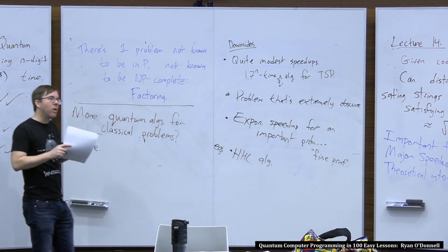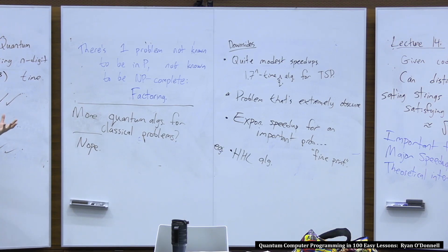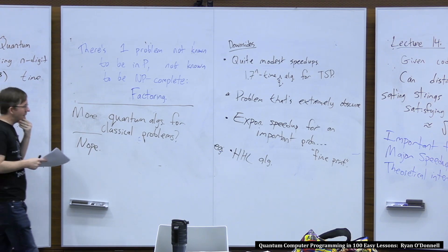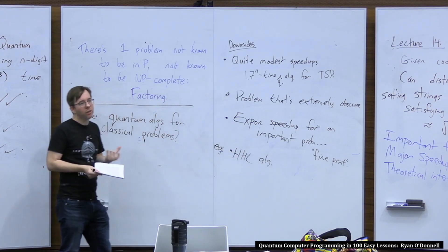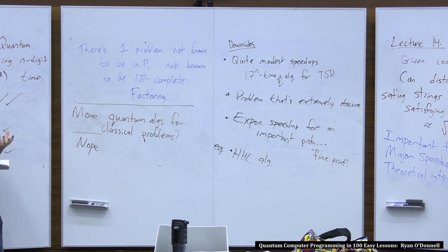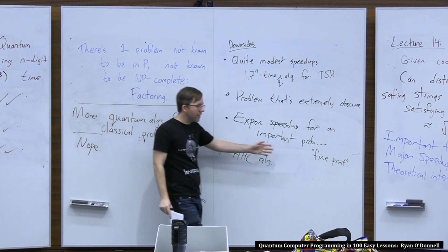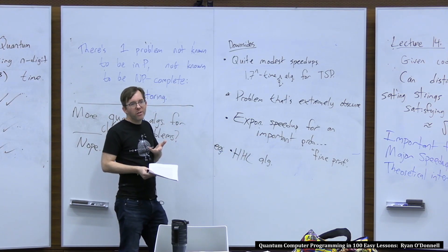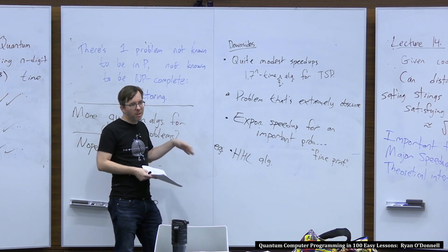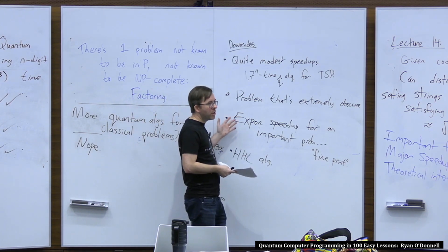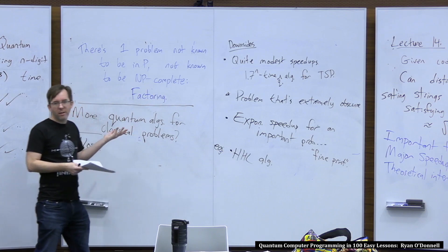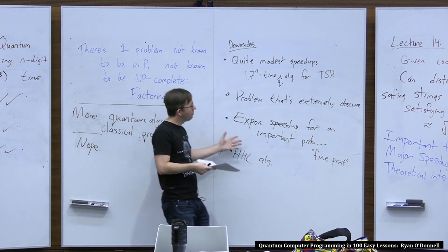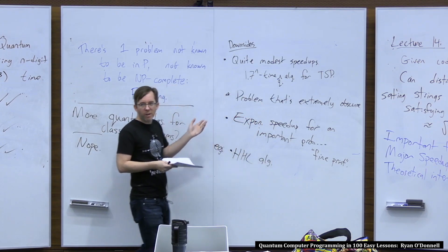But there are somehow a million caveats. The matrix has to have a special form. You have to somehow get the B in AX equals B into a quantum state. And you don't actually get the solution X — you only get to sample from the solution X. Every time people have tried to use it as an ingredient to actually solve a natural problem, when they figure out how to overcome the fine print, they get into a situation where there's a classical algorithm that can also solve the problem exponentially faster. So although it looks cool, we don't know any actual setting where you can use this algorithm to solve a problem faster than a classical algorithm can.